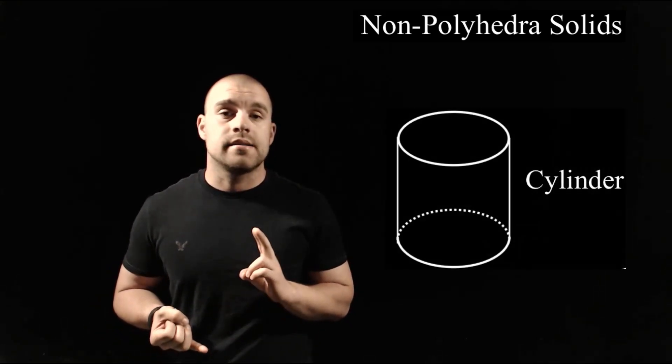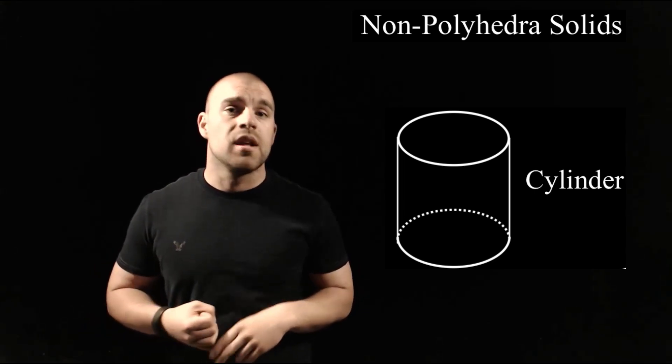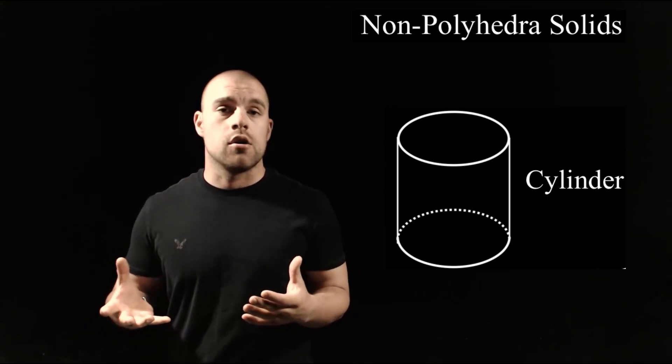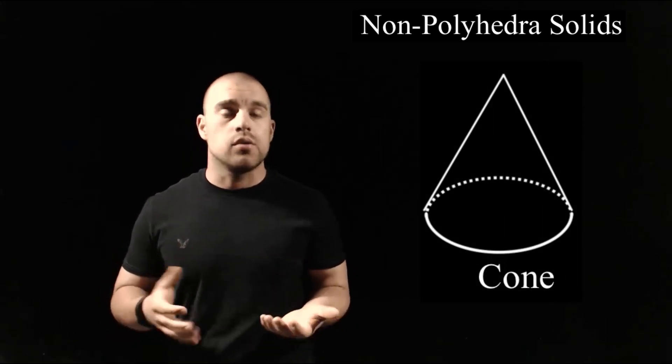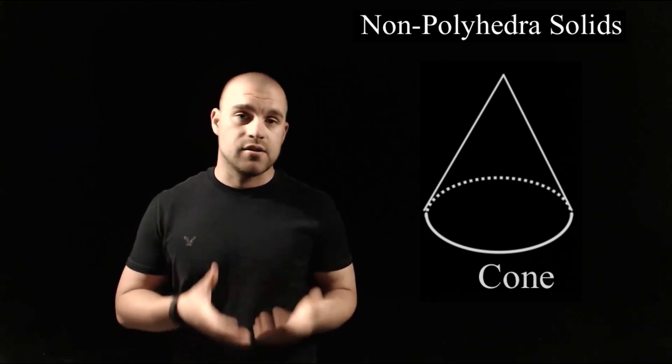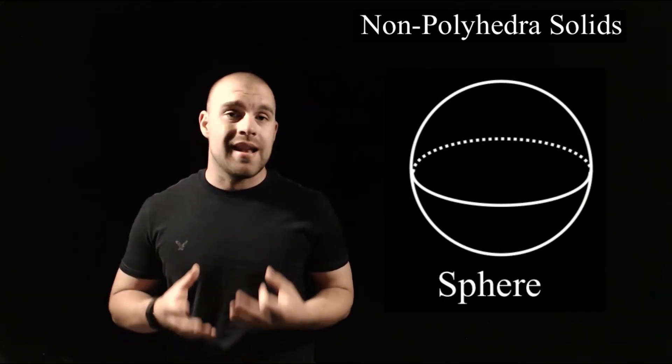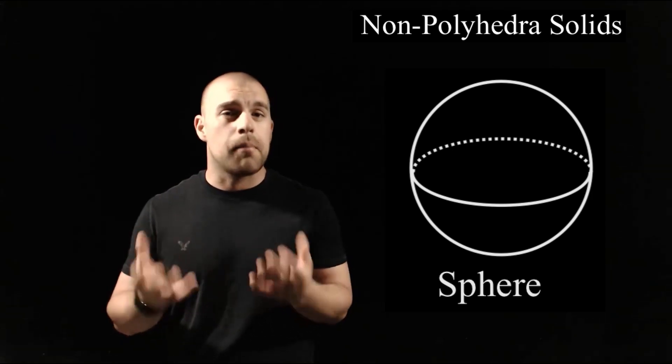As far as our non-polyhedra solids go, there's going to be three of them that we deal with. The first one is a cylinder, and you could sort of compare a cylinder to a prism, except its bases are circles. The next one we've got is a cone, and in a cone, you can kind of compare to a pyramid, but again, it's got a base figure of a circle. And then our third non-polyhedral solid that we'll deal with is a sphere or just like a ball shape.